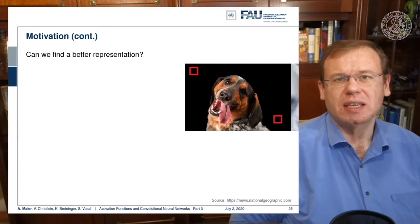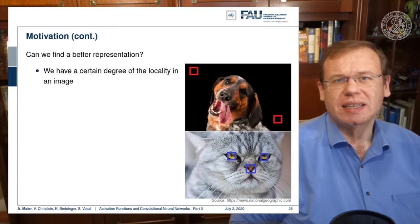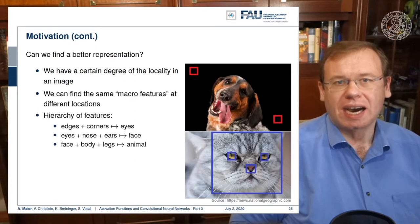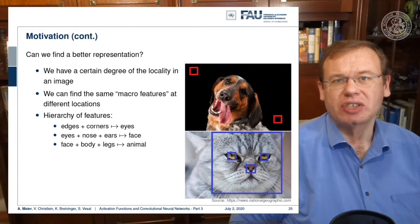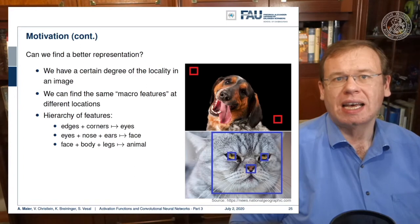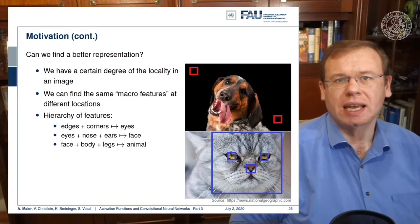You want to create something that is more abstract and summarizing the information better. The question is, can we find a better representation? We have a certain degree of locality in an image, so we can try to find the same macro features at different locations and then reuse them.